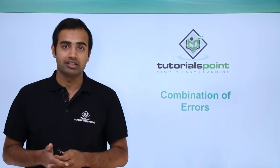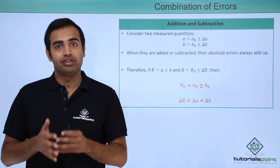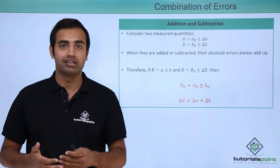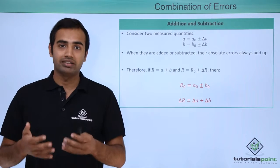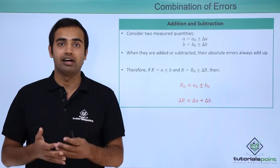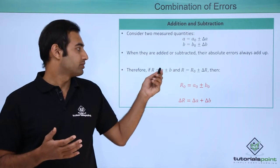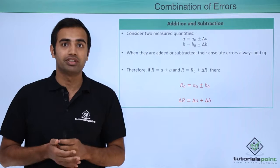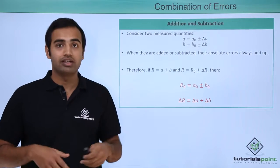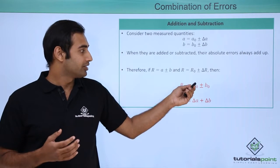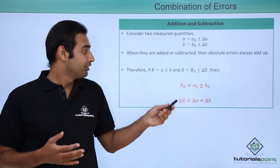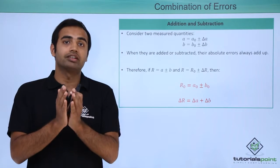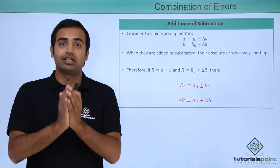We will see each arithmetic operation case by case in this video. First, let's talk about addition and subtraction. Consider two numbers a and b each having delta a and delta b error associated with them. When we perform either addition or subtraction, the result r is defined as a plus or minus b, and r equals r naught plus or minus delta r. What we observe is that r naught equals a naught plus or minus b naught, but the error in the final result is simply added. So no matter whether you add or subtract two quantities, their errors are always added.